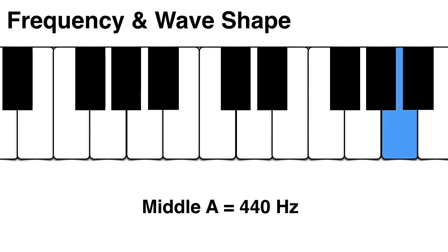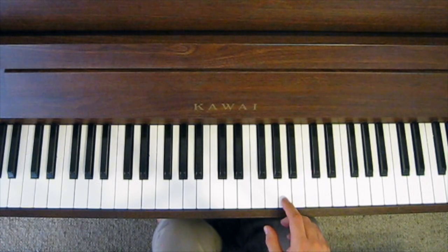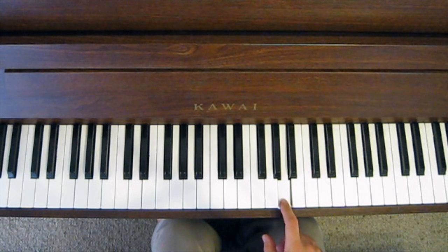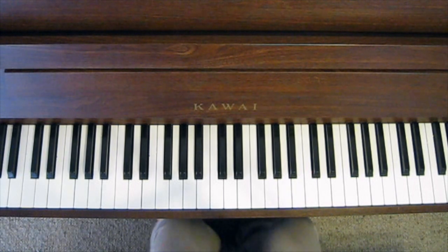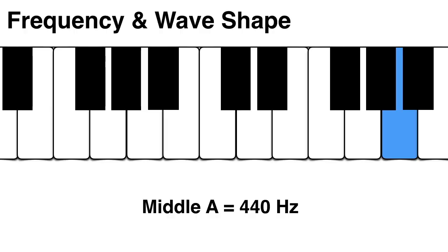When you play middle A above middle C on a piano, the frequency is 440 hertz. Again, this means the string is vibrating back and forth 440 times per second.